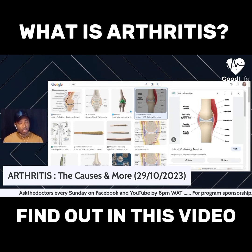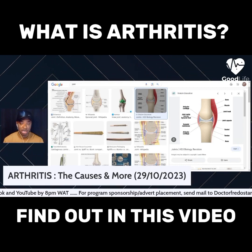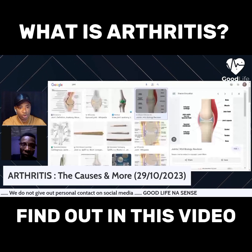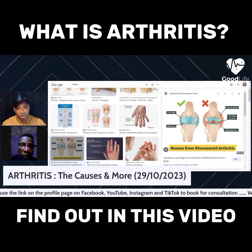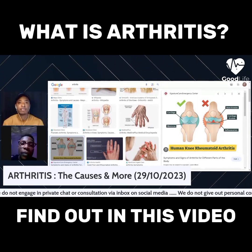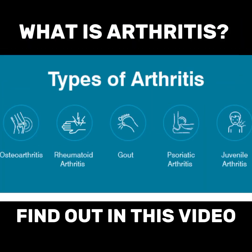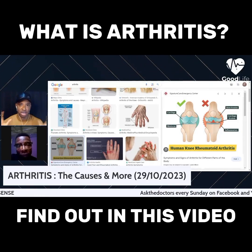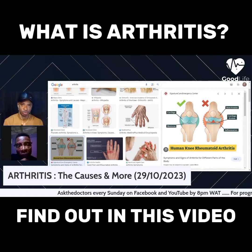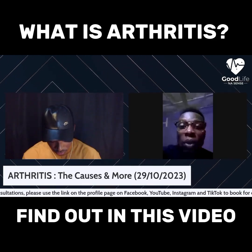People come and say 'doctor, I have arthritis,' but when you ask what type they don't know. Arthritis can affect children and elderly people at any age. There are many types: osteoarthritis, rheumatoid arthritis, juvenile idiopathic arthritis, gout, ankylosing spondylitis, reactive arthritis, and septic arthritis. Today we'll give a basic understanding of what arthritis is.